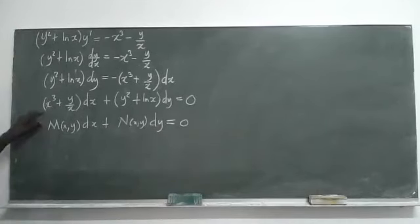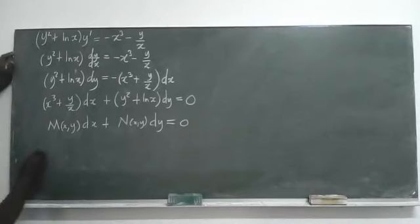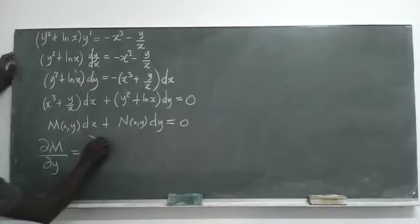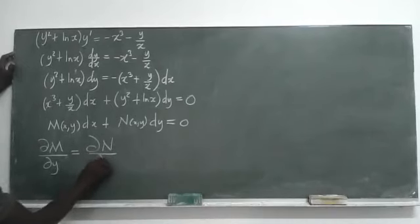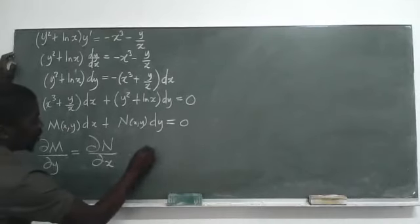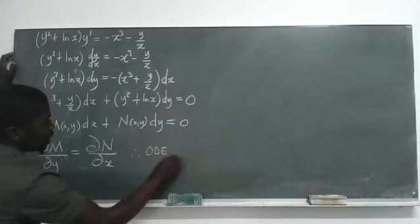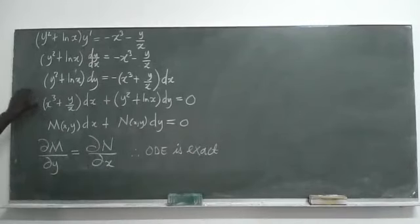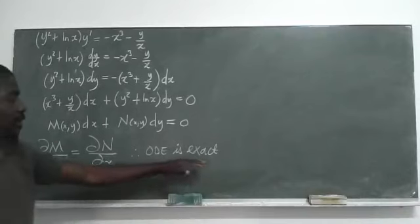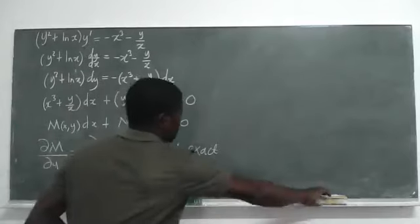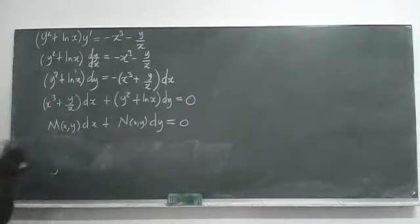If we have an ODE of this form, we can prove exactness by checking whether the partial derivative of M with respect to y equals the partial derivative of N with respect to x. If this condition is satisfied, we can say the ODE is exact. Let's check these partial derivatives.